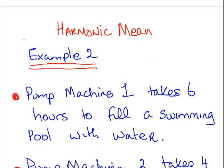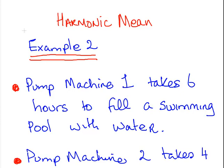Let's look at a real world example. This is where we would use the harmonic mean. Pump machines. This is 2 machines. The first machine takes 6 hours to fill a swimming pool with water.